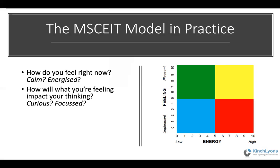Secondly, how do you think this feeling will impact your thinking over the next while as we talk through this model? For example, if you're in that calm zone, will that help you to be more focused? If you're in the yellow zone, will you be thinking about possibilities and how you might use the MSCEIT? If you're in that blue zone on the lower end, maybe you're looking at this quite critically, thinking about the downsides. So just understand what emotion you're feeling and how it might be influencing your current thinking.